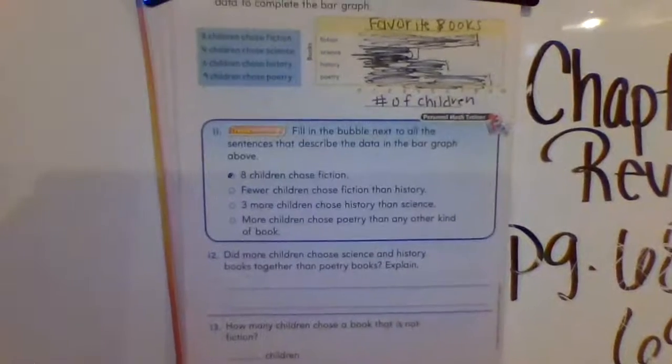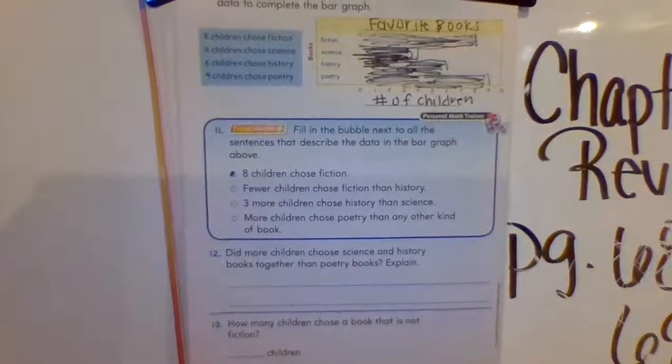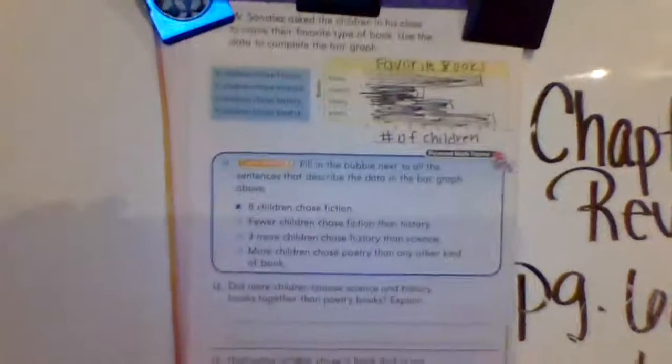All right, fewer children chose fiction than history. So fiction was 8, history was 6. So no, that one's not correct.